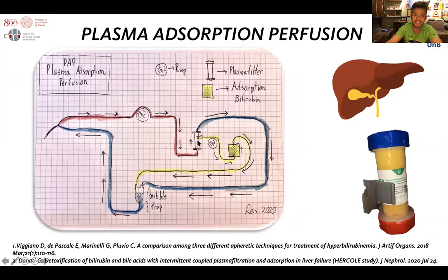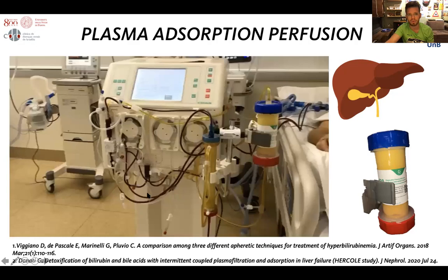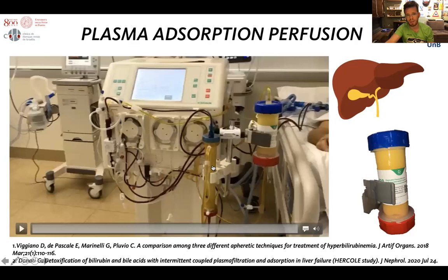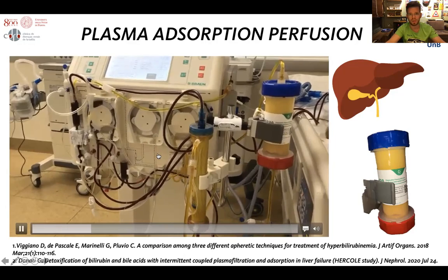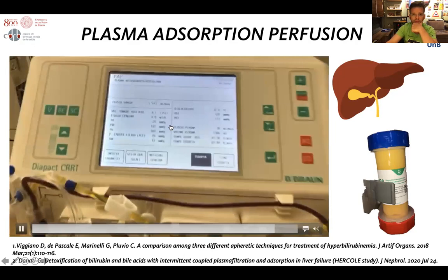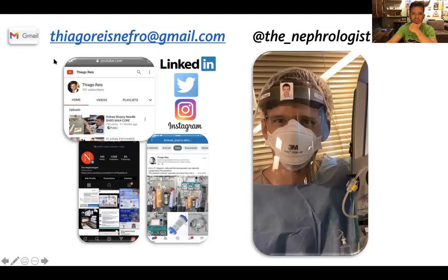Finally, we have plasma adsorption perfusion, a treatment performed in Vicenza. This represents the vascular access: blood goes through the blood pump down into a plasma filter, which drives 30% of the plasma through a separate pump and then through a cartridge with properties to absorb bilirubin and bile acids. They then merge back at the bubble trap. The blood flow is around 150 mls per minute, with 30% of plasma going through the cartridge loop and returning to be reunited with the blood at the bubble trap.